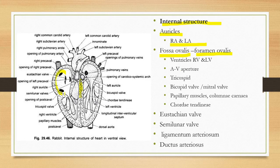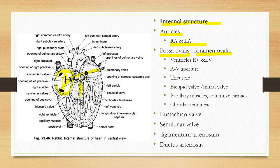In the right auricle, there are three openings: the opening for the right pre-caval vein, the opening for the left pre-caval vein, and the opening of the post-caval vein. Near the opening of the post-caval vein, there is a structure called the Eustachian valve, which regulates the flow of blood from the post-caval vein into the left auricle through the foramen ovalis.